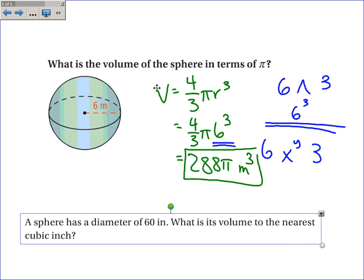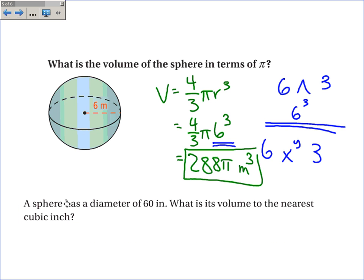The second one, a sphere has a diameter of 60 inches. What is its volume to the nearest cubic inch? Okay, again, the volume is 4 thirds pi r cubed. The radius is, let's see, this is a diameter. So the radius must be 30. So it's 4 thirds pi times 30 cubed. 4 thirds times 30 cubed.